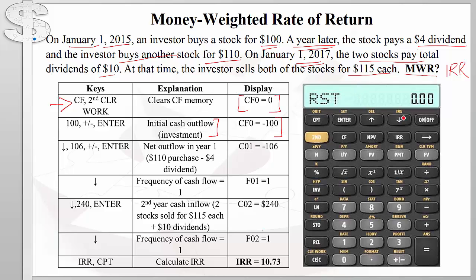We then hit the down button, then enter 106, minus, Enter. This shows the net cash outflow in year one: we bought the stock for $110 and received a $4 dividend, so the net outflow was $106.